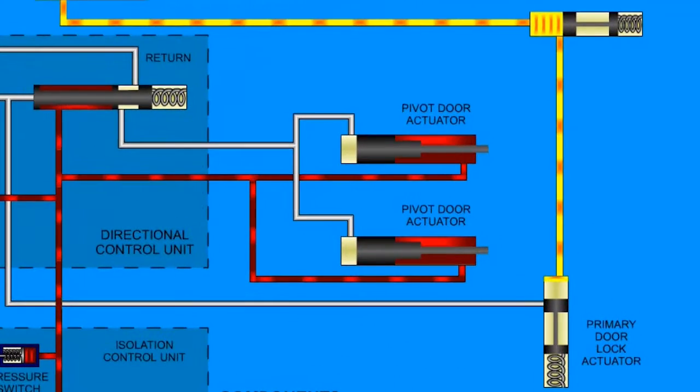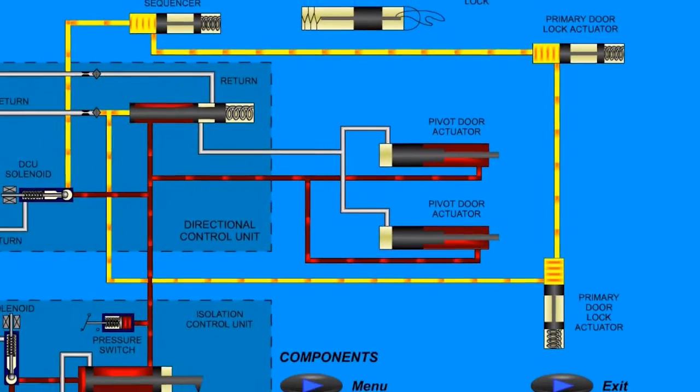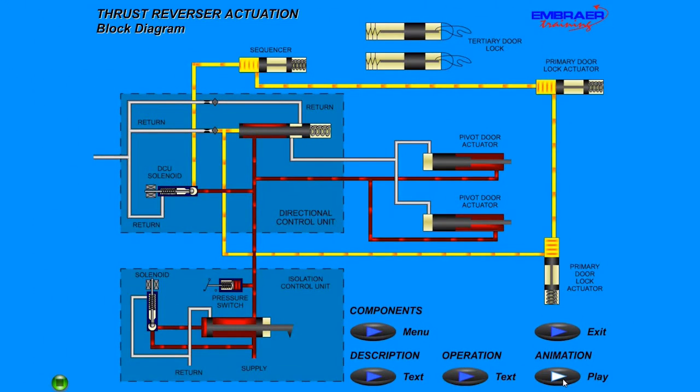The primary door lock actuators, also known as ASUX, once open, will send the hydraulic pressure back to the pivot door actuators, and that will actually open the TR doors.